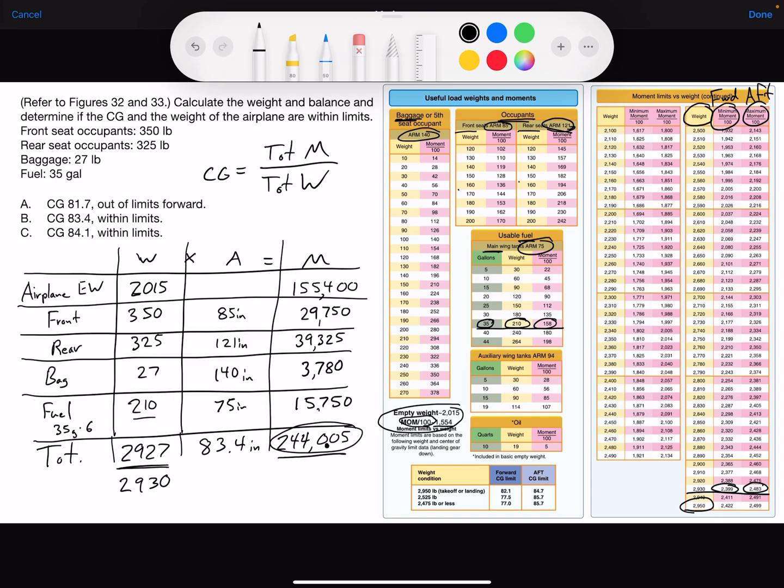So looking at the answer choices, we have our center of gravity is 83.4, which rules out alpha and Charlie. And the CG we have confirmed is within limits. Answer bravo is correct.